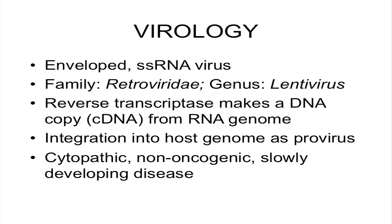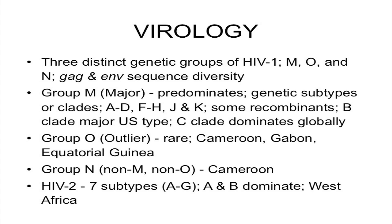As far as virology goes, HIV is an enveloped, single-stranded RNA virus in the family Retroviridae, genus Lentivirus. All retroviruses have reverse transcriptase enzymes that make a DNA copy — called cDNA — out of the RNA genome. The virus then integrates into the host genome and becomes a latent provirus. It is cytopathic, non-oncogenic, and results in slowly developing disease due to this latency. Three distinct genetic groups within HIV-1 — M, O, and N — differ because of sequence diversity in their GAG and envelope genes.